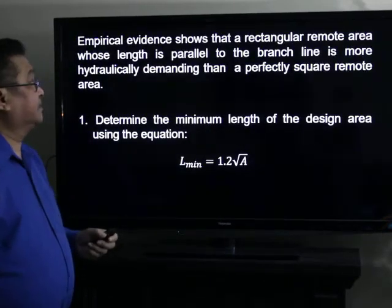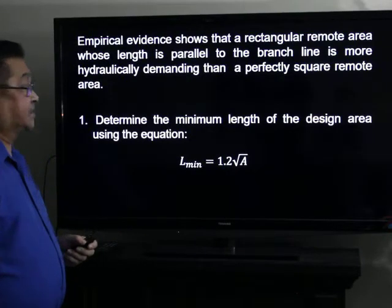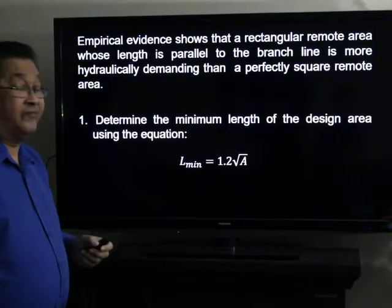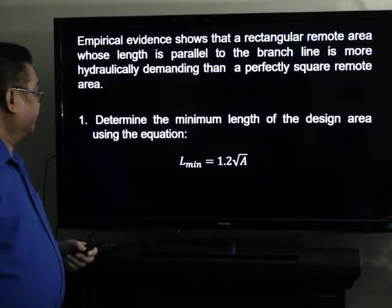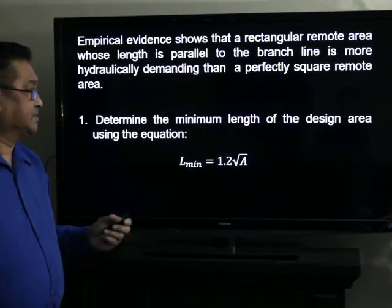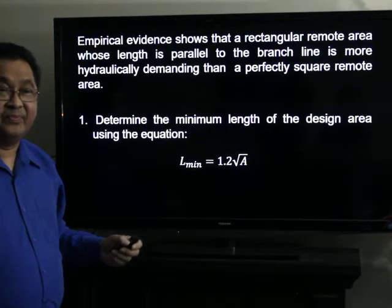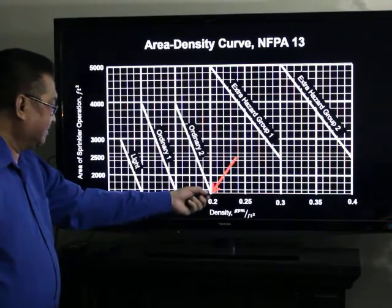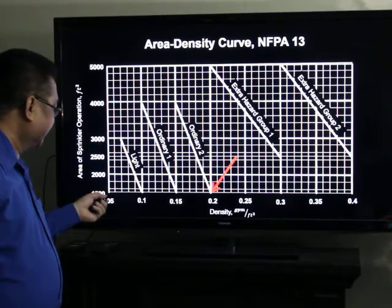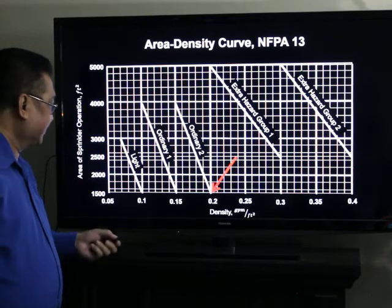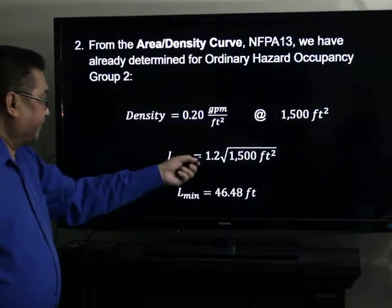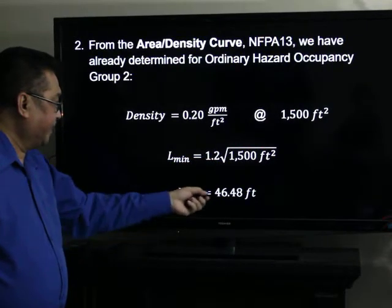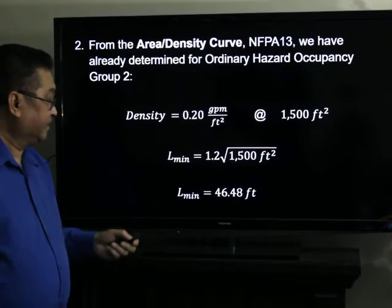Empirical evidence shows that a rectangular remote area whose length is parallel to the branch line is much more hydraulically demanding than a perfectly square remote area. Determine the minimum length of the design area using the equation L subminimum is equal to 1.2 square root of A. We have chosen 1,500 square feet and a density of 0.2 gallons per minute per square feet. From the equation, 1.2 square root of 1,500, we have the minimum length of the design area, 46.48 feet.